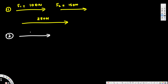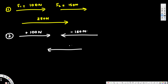Now let's look at an example with opposite directions. We have 100 newtons in one direction and 150 newtons in the opposite direction. We assign positive to one and negative to the other. Adding these together gives negative 50 newtons, which is the resultant vector. If they ask for the magnitude, we don't worry about the negative sign — it's 50 newtons.